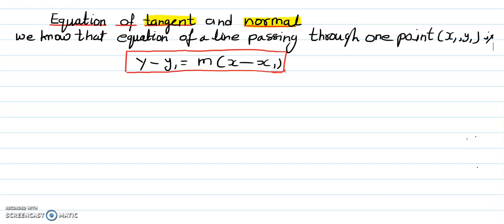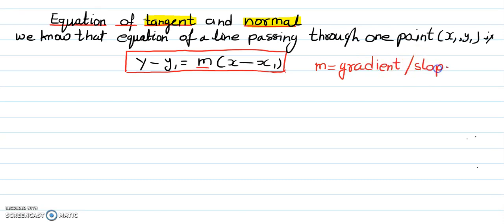We know that the equation of a line passing through one point is given by y minus y1 equal to m times x minus x1. This m has one special name — m is called gradient. Gradient's another name is slope. In GCSE, you do it rise over fall, so that gives you gradient.